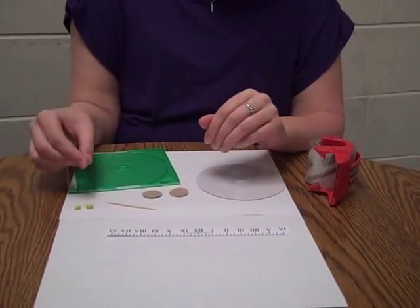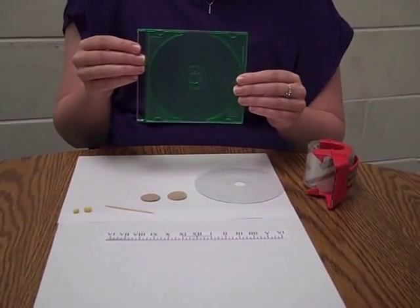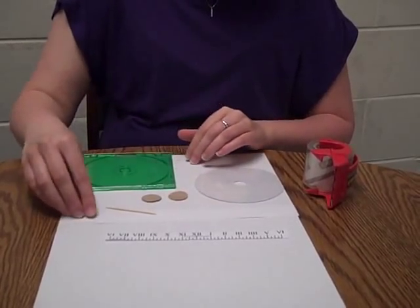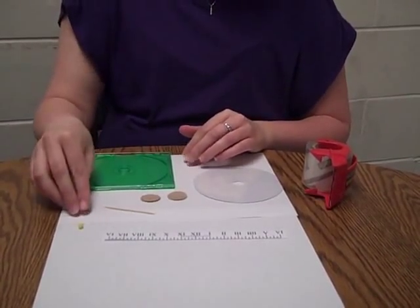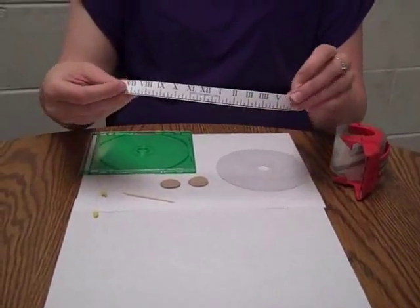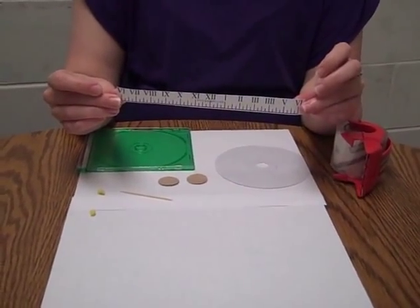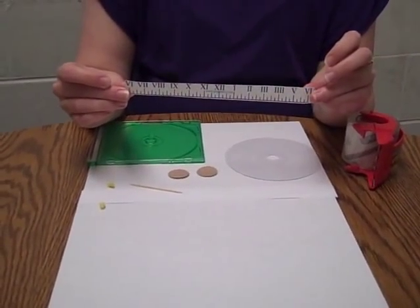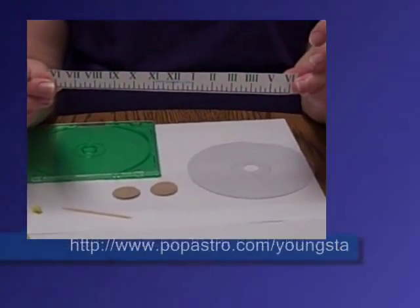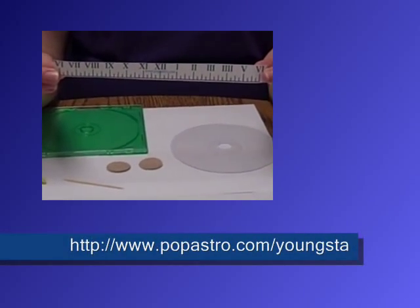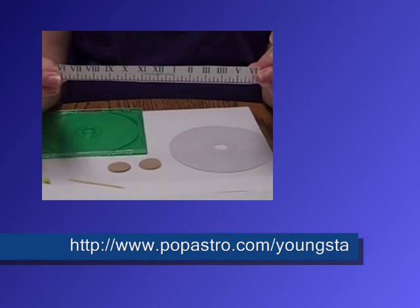You will also need an empty CD case, yellow tack, and a printout copy of an hour circle. To get a copy of an hour circle, go on the website listed below. You will find a copy of the circle, then print it out.